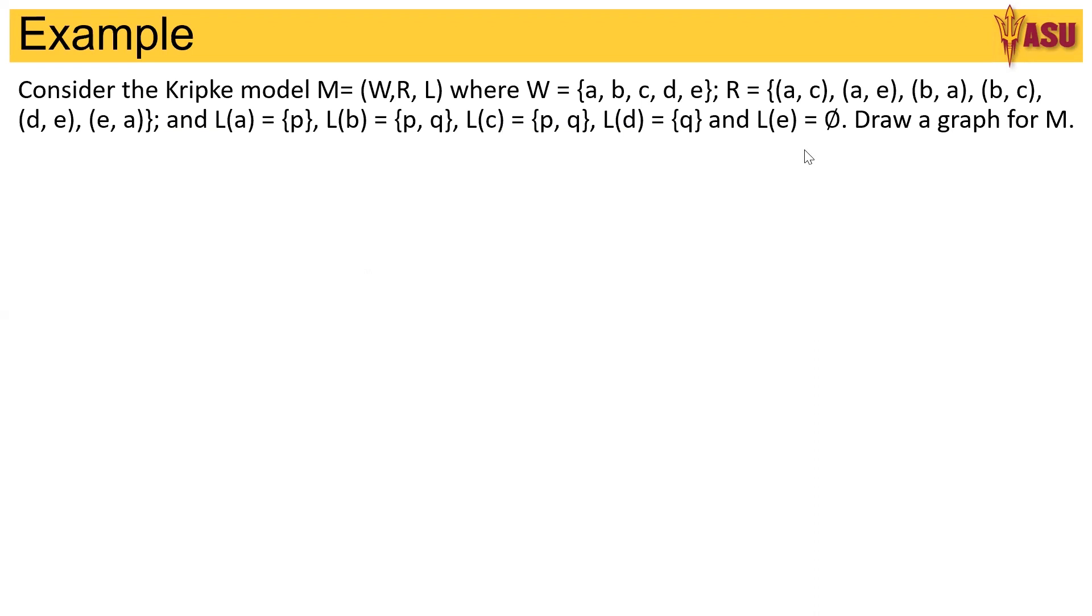As a quick recall, this is called the box and it means necessarily, or the agent Q knows. This is called the diamond and it is possibly, or something close to there exists, it is consistent with the agent's knowledge type. Here we will take the interpretation of box being necessarily and the diamond meaning possibly.